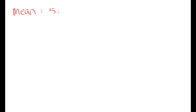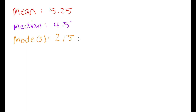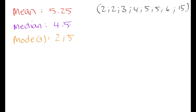To summarize: our mean was 5.25, our median was 4.5, and our modes were 2 and 5, calculated from the data set 2, 2, 3, 4, 5, 5, 6, 15. The mean was higher than the median and both modes because the value 15 is pulling the mean up. This shows that the mean is quite sensitive to outliers — values that are much higher or lower than the rest of the data set.